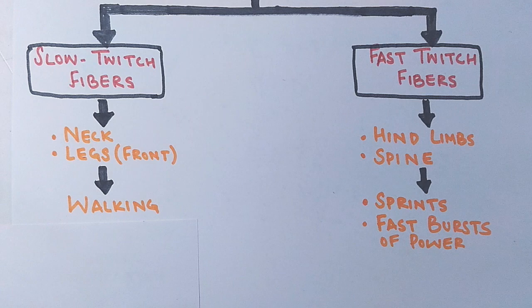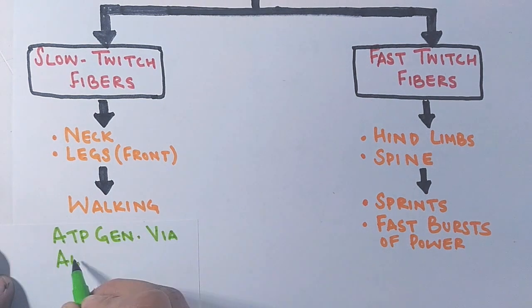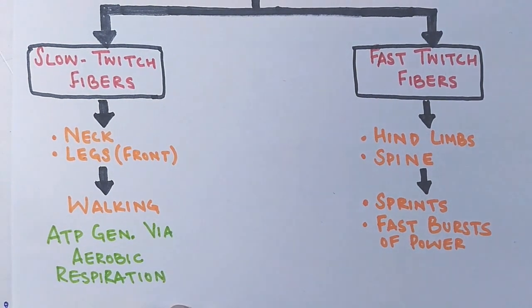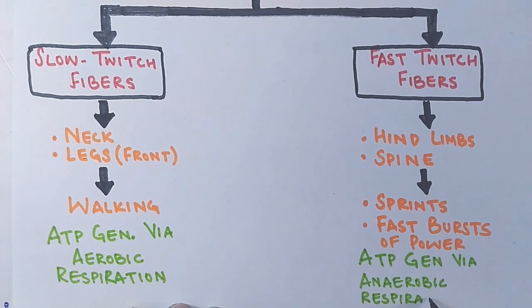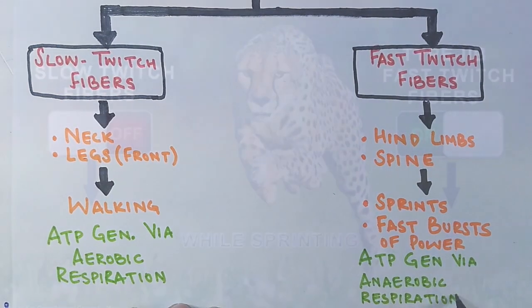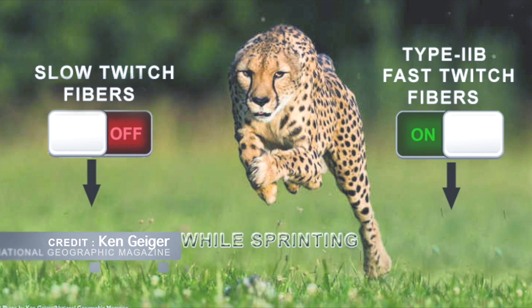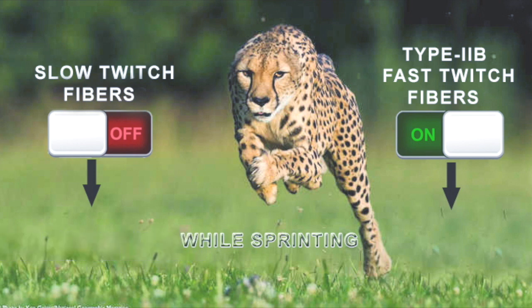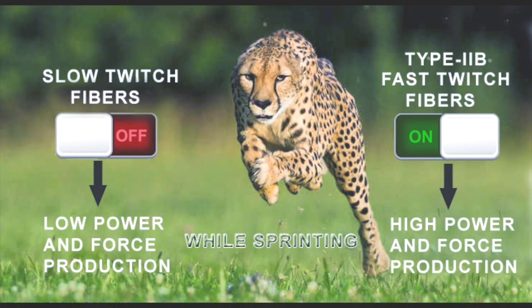An important thing to remember is that slow twitch fibers generate ATP via aerobic respiration, while fast twitch fibers generate ATP via anaerobic respiration. As you can see in this picture, when a cheetah starts to sprint, initially the slow twitch fibers are used, but immediately when the cheetah requires immense bursts of power, it shuts down the slow twitch fibers and the fast twitch fibers take over. Slow twitch fibers have low power and force production, whereas fast twitch fibers have high force and high power production, which is why they are used during the sprint.